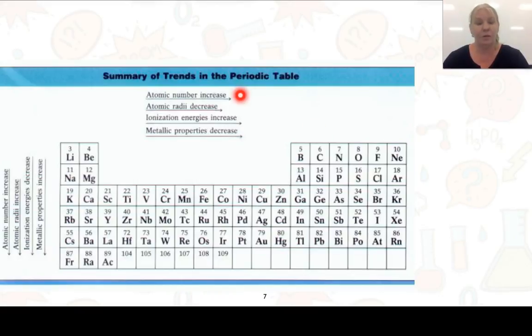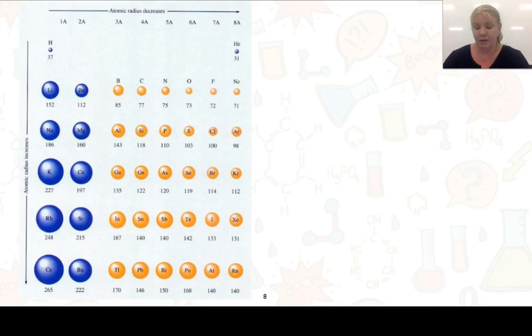You can see that we have the atomic number increases as we're going across, radii decreases, and we have metallic properties decreasing and ionization energy increasing. On the side here, we can see that going down, metallic properties increase, atomic radii increases, and atomic number increases as well. So you could take some time to put those onto your periodic table.